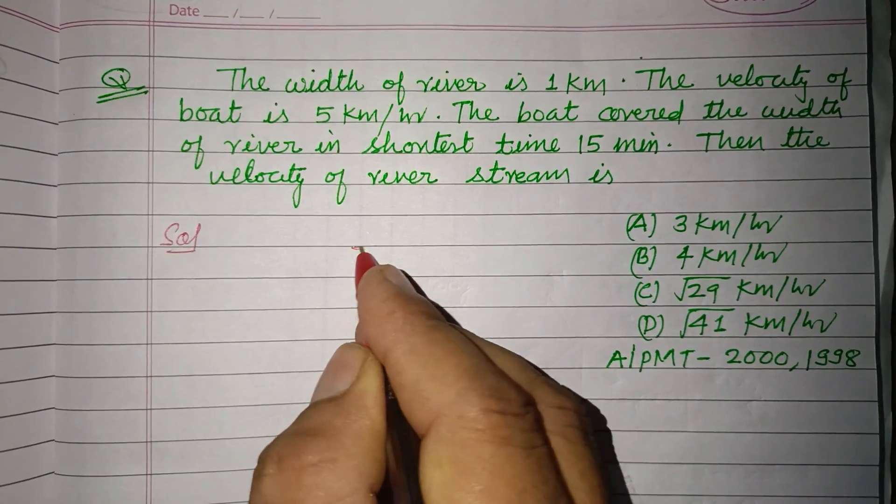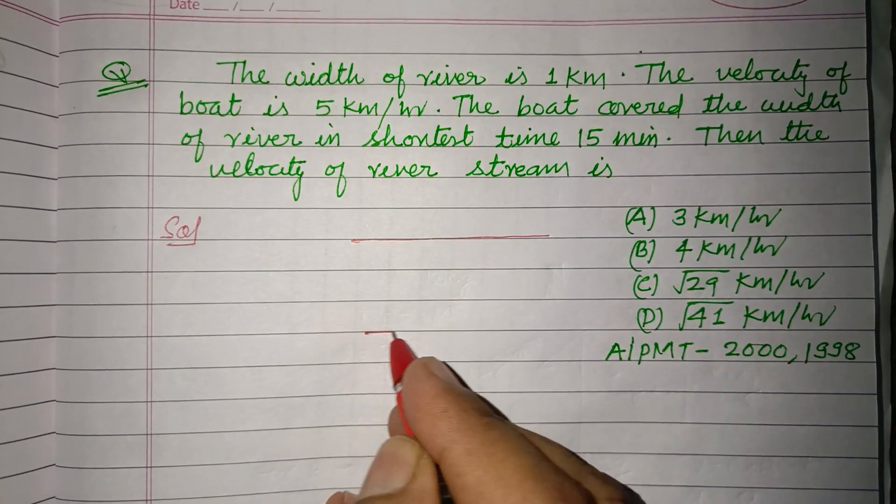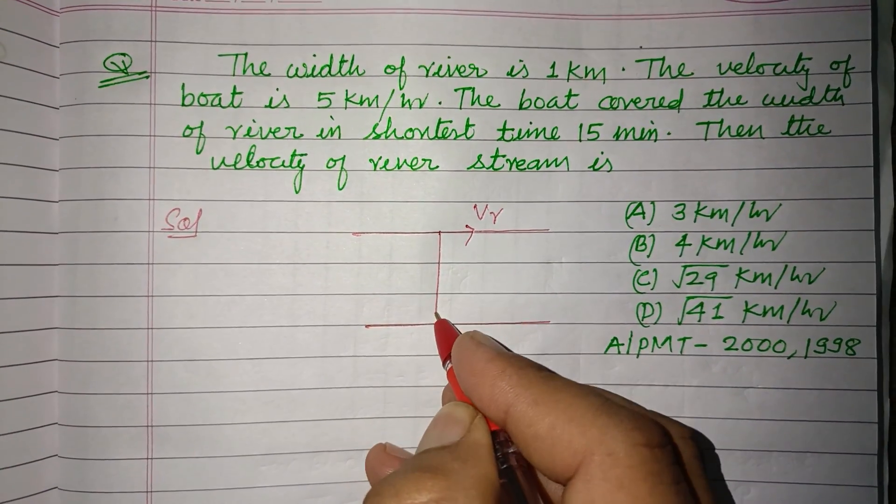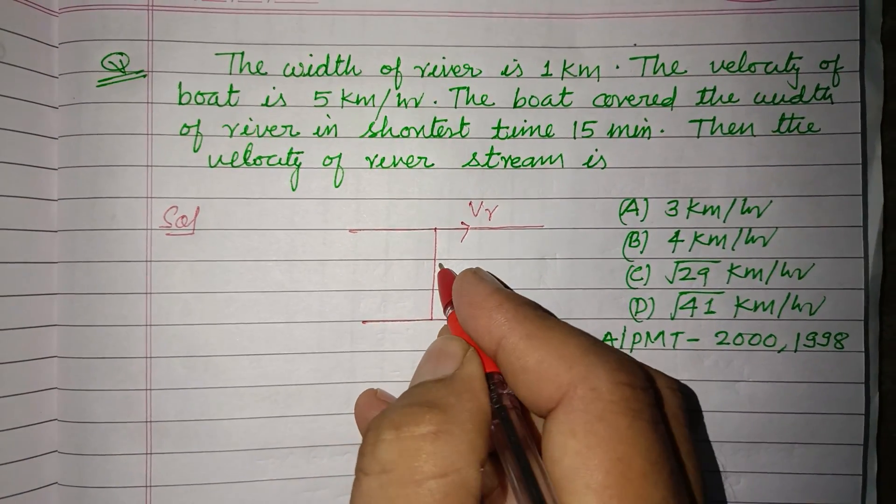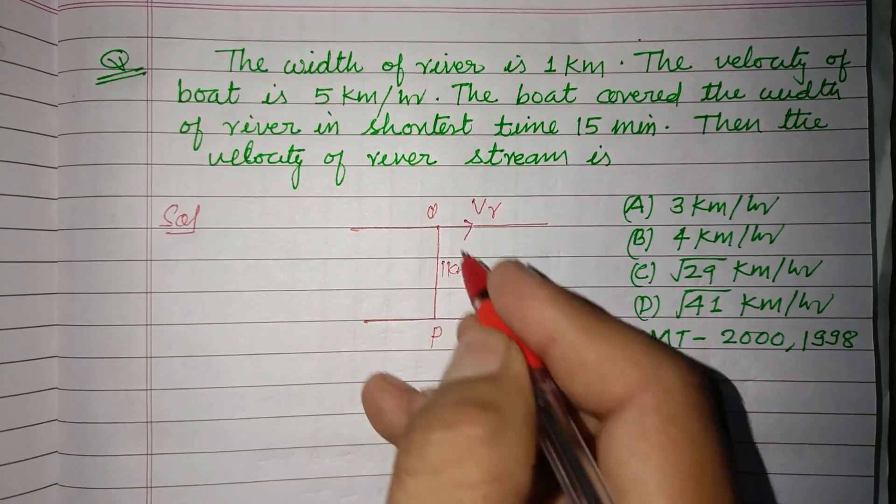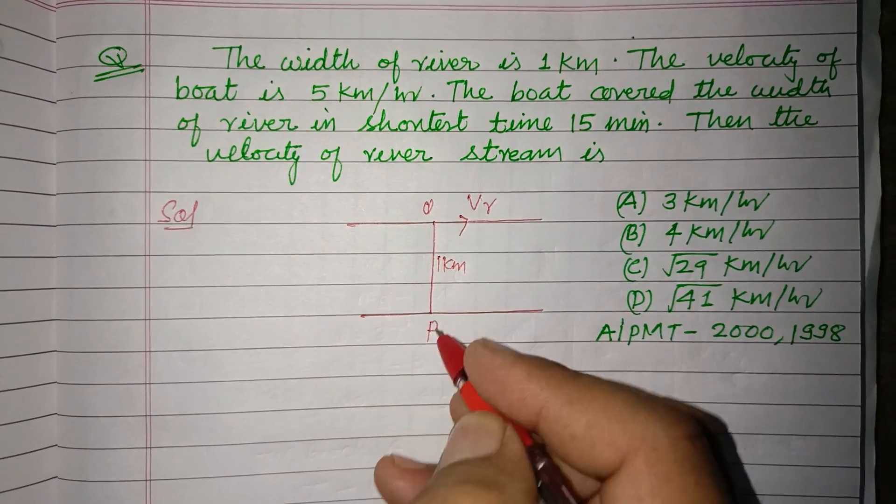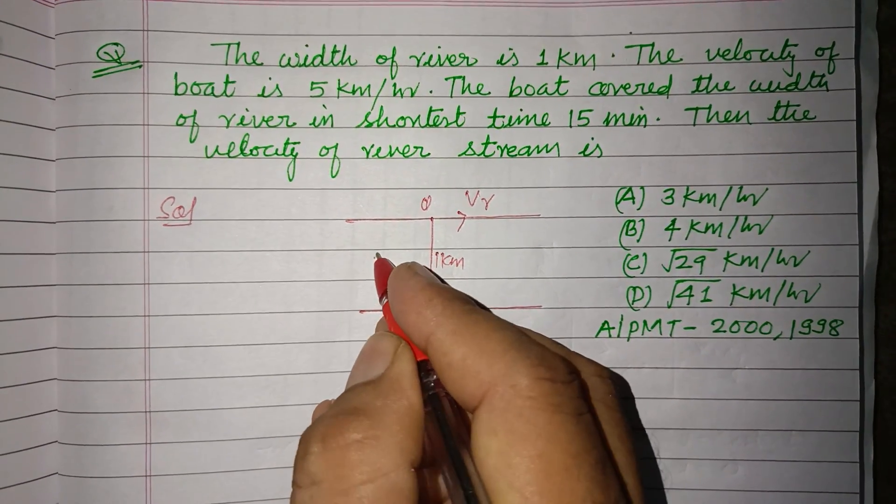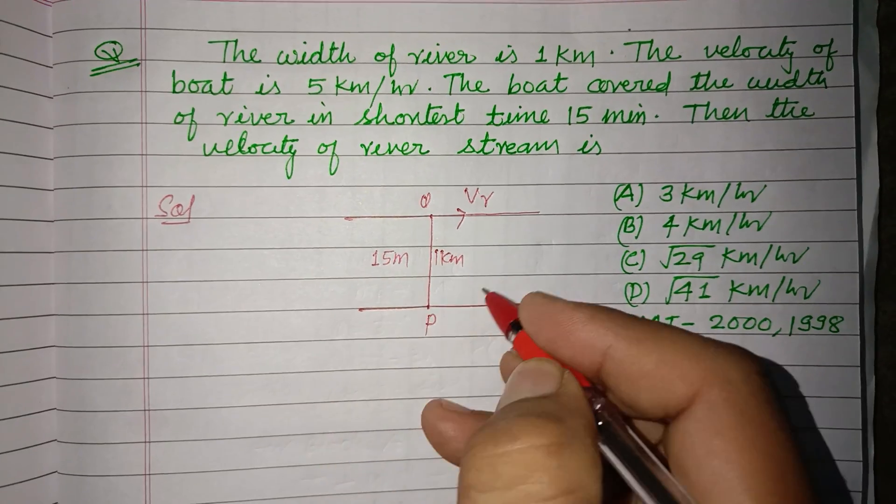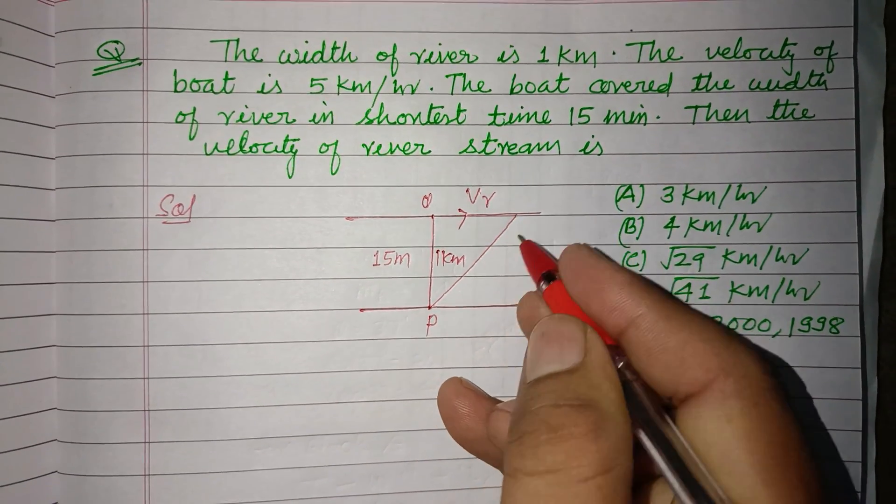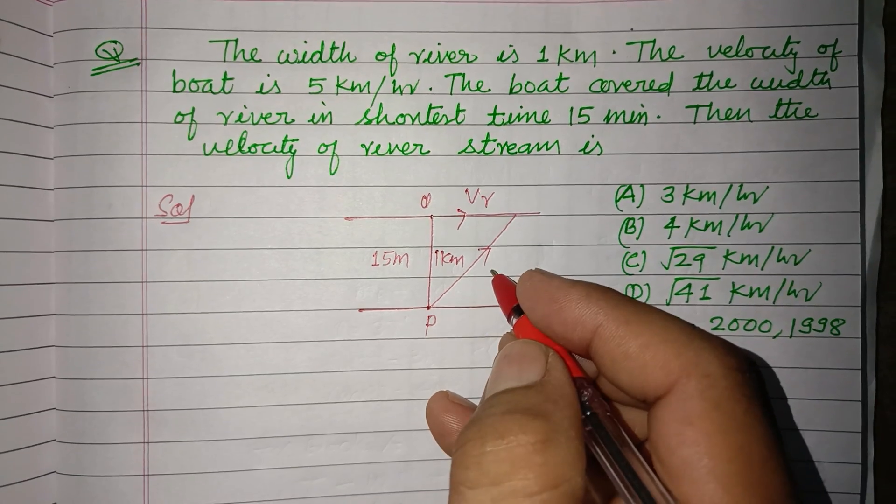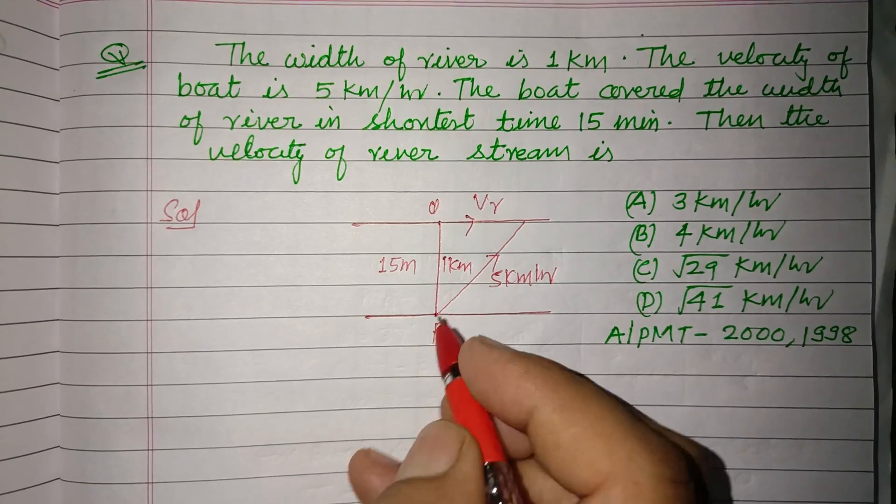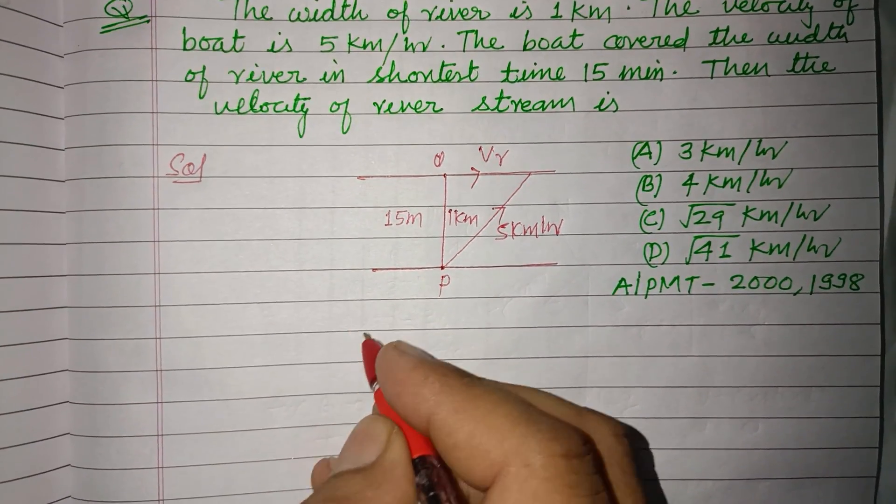So students, here this is a river which is flowing with velocity Vr, and this is the width of the river which is 1 kilometer PQ. The boat wants to swim this shortest path in 15 minutes, but it swims at this side with velocity 5 kilometer per hour.